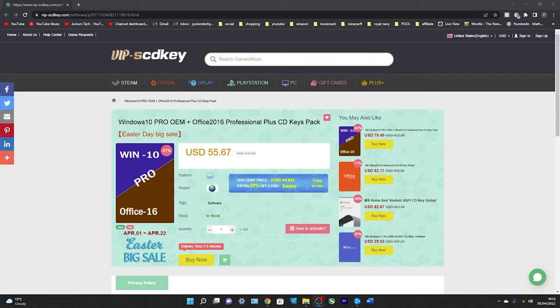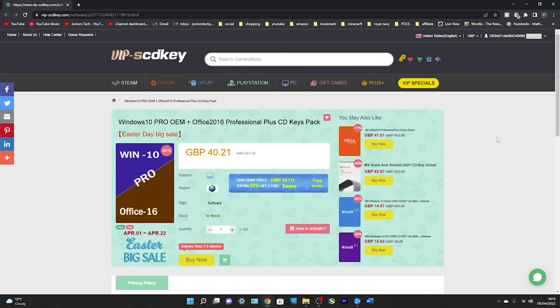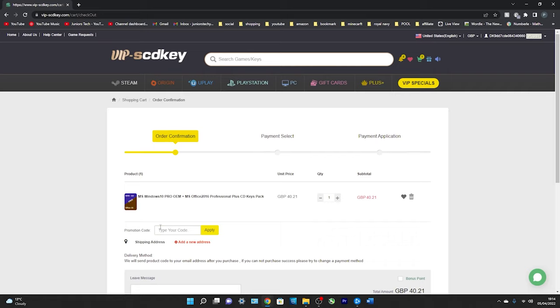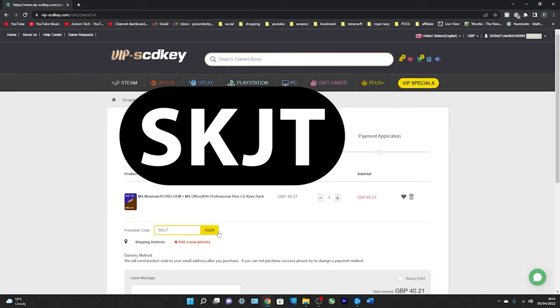Now we've had a look at Windows 10 Pro OEM key, I've got one more thing I want to show you. This is the Windows 10 Pro OEM key and Office 2016 Professional Plus. As we see on the right hand side, it was reduced from 327 pounds 78 pence down to 40 pounds 21. But I've got a cheeky little discount for you as well. Promotion code SKJT, which will also be in the description. Click on apply and it goes from 40 pounds 21 pence down to 30 pounds 16.